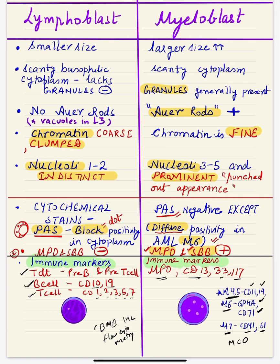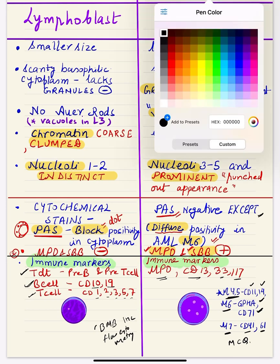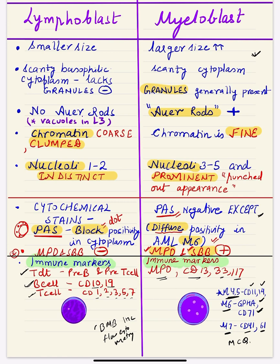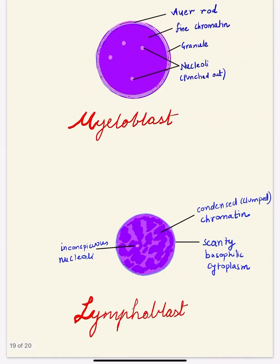These points are very important for MCQs. At the MBBS level, you should know the morphological differences between lymphoblast and myeloblast, the cytochemical stains — PAS, myeloperoxidase, Sudan Black B — and at least the names of the immune markers. In the next video, I will show how to draw a diagram for myeloblast and lymphoblast to supplement exam answers. Thank you very much — questions and feedback are welcome in the comment section.